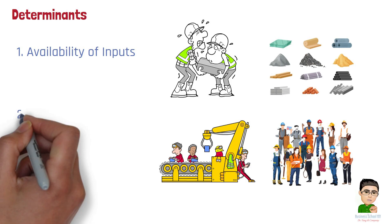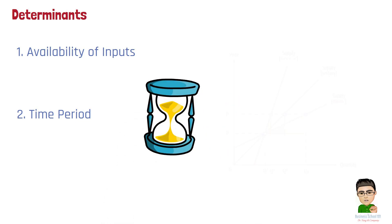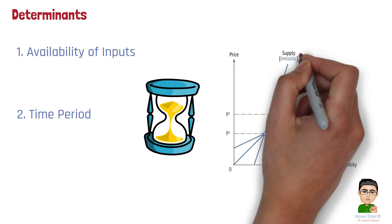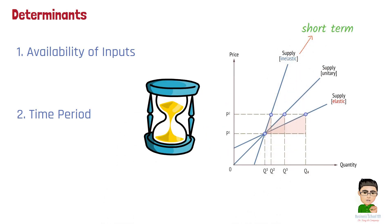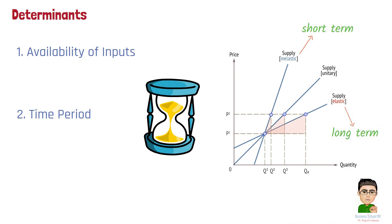Number 2: Time period. The time producers have to respond to price changes is a crucial factor. In the short term, supply is usually inelastic because it's harder for producers to change production levels quickly. However, in the long term, supply becomes more elastic as producers have more time to adjust production capacities, invest in new technologies, or enter or exit the market.